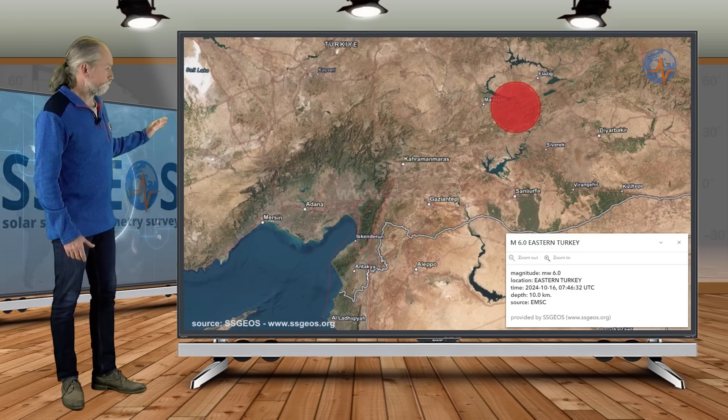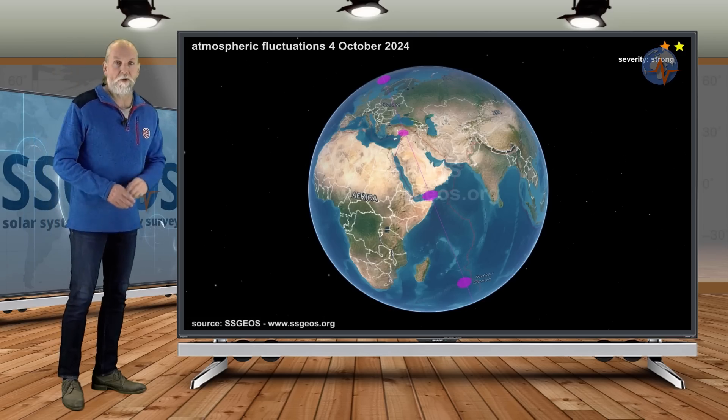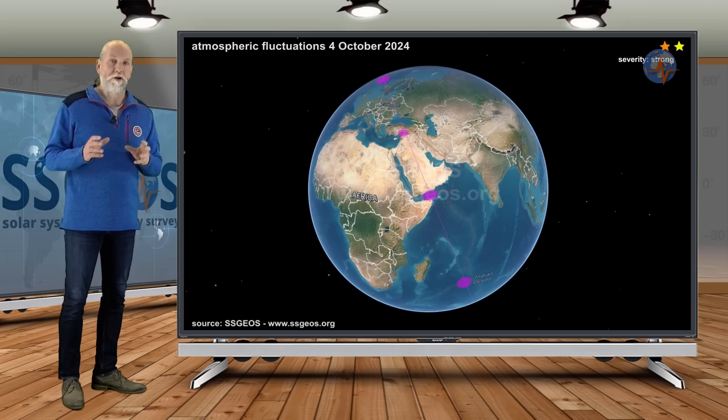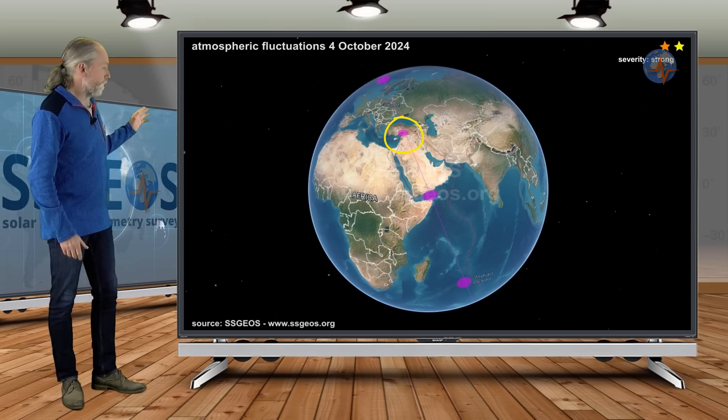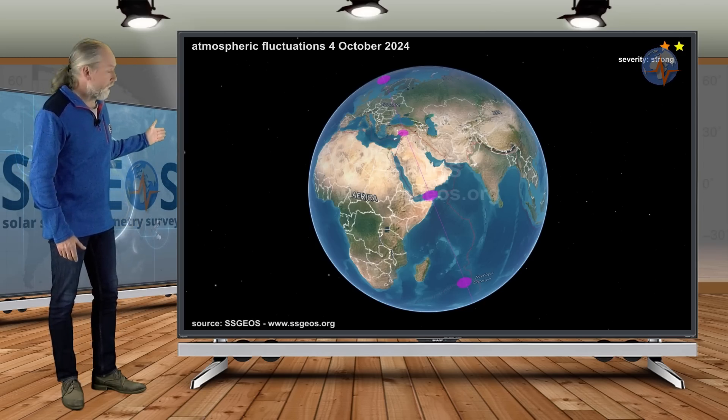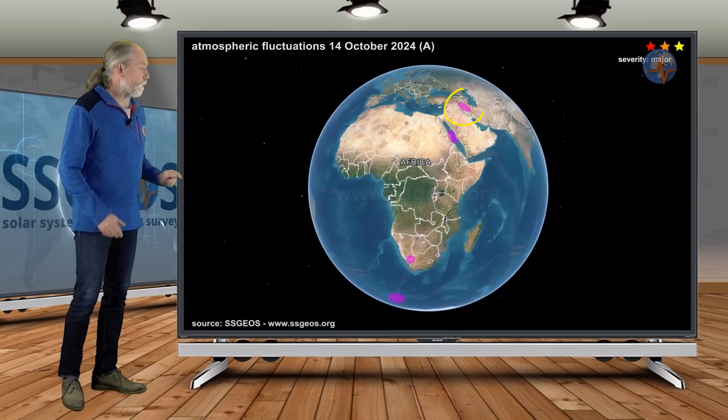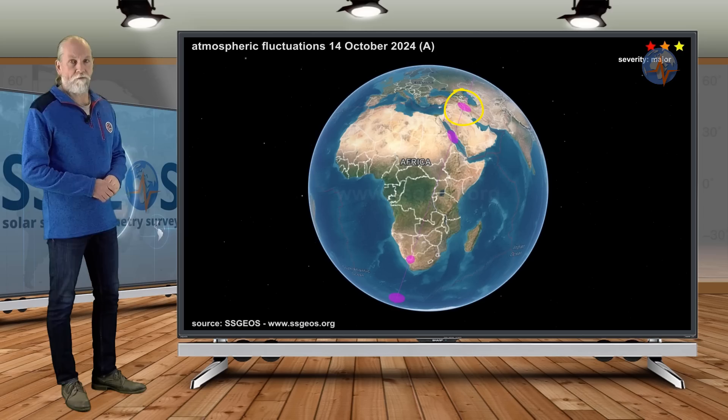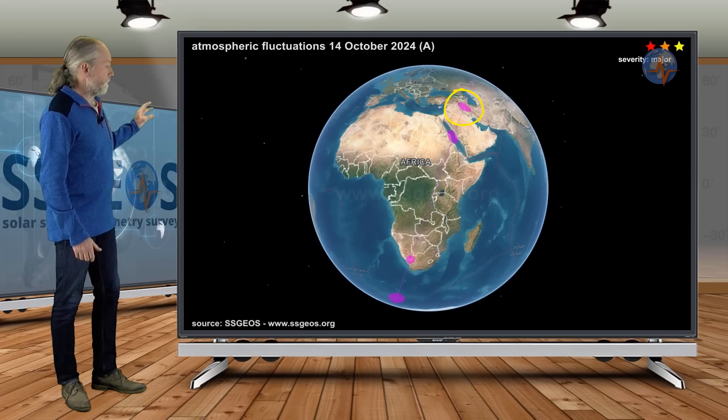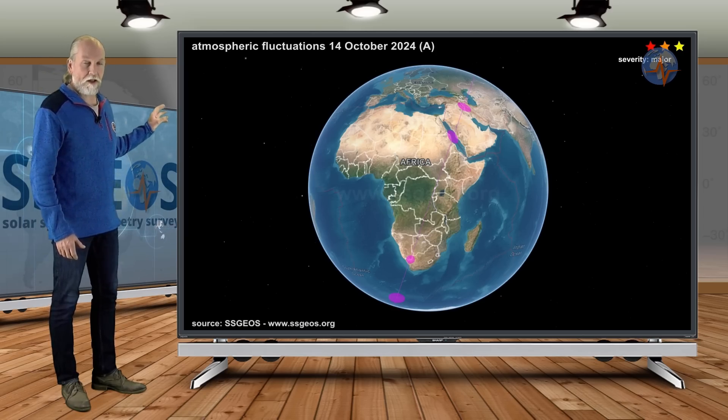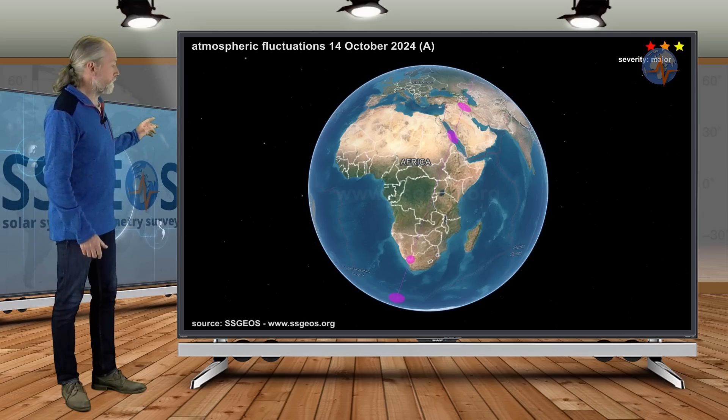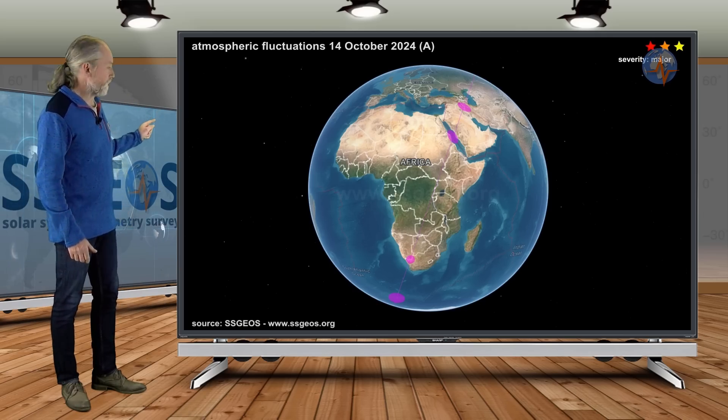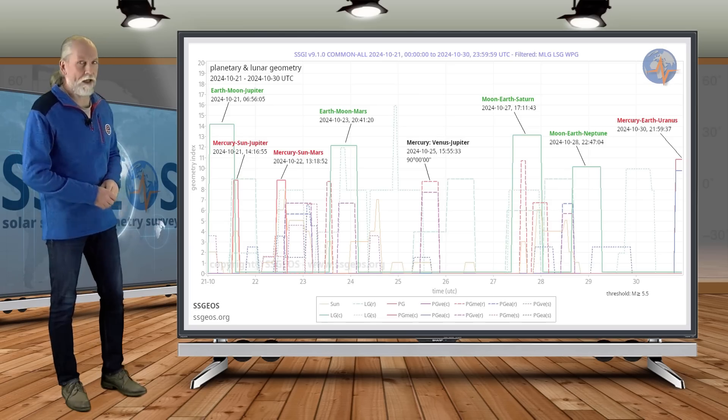Also, if you look at atmospheric fluctuations, the first indication of upcoming stronger seismic activity in the region was on October 4th, and again slightly to the east on October 14th. This can be a significant indicator of upcoming stronger seismic activity. We really shouldn't dismiss these atmospheric fluctuations.